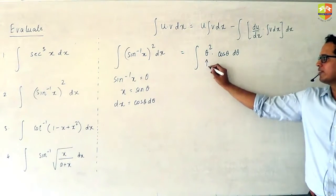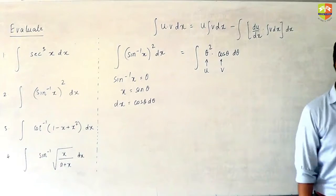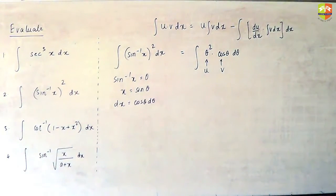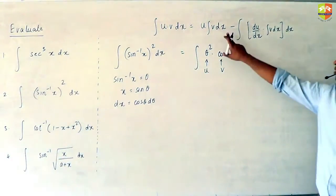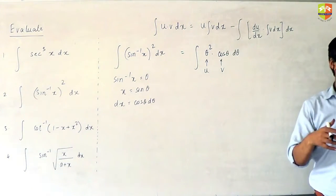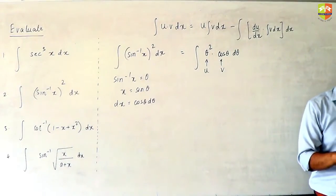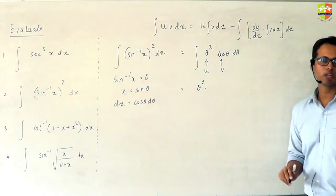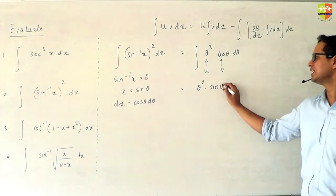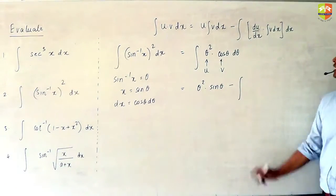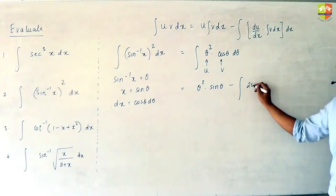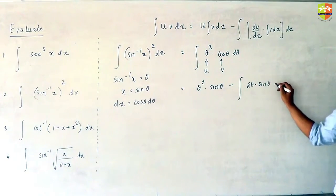Now θ² is your algebraic function. Don't go by the symbol — just think of it as the square of the variable, just like x². Wherever there is an x, start treating that x as θ. So apply integration by parts: u times the integral of cos θ is sin θ, minus the derivative of u which is the derivative of θ² with respect to θ, which is 2θ, times sin θ dθ.